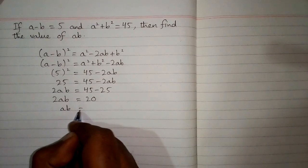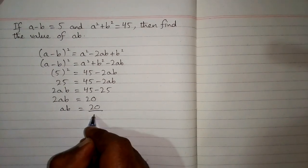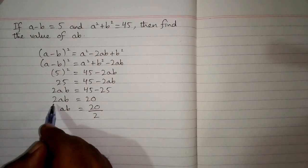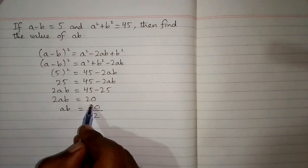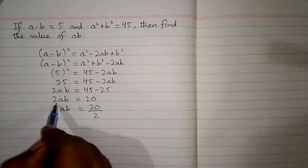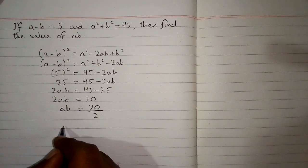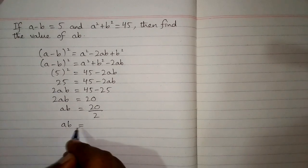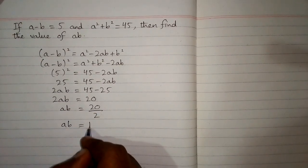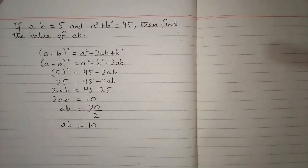So the value of ab is equal to 20 upon 2, which is equal to 10. We have the required answer, which is ab is equal to 10.